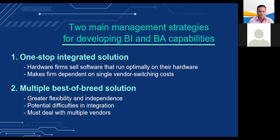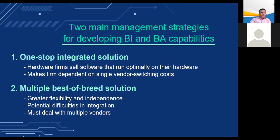Geographic information systems, or GIS, help decision makers visualize problems requiring knowledge about the geographic distribution of people or other resources. GIS software ties location data to points, lines, and areas on a map, and some GIS have capabilities for changing data and automatically revising business scenarios — for example, helping state and local governments calculate response times for natural disasters. There are two main management strategies for developing business intelligence capabilities: a single integrated solution, which may be easier to manage but creates vendor dependence, or multiple best-of-breed solutions, which offer greater flexibility but may pose integration difficulties and require dealing with multiple vendors.